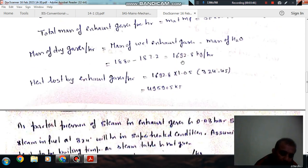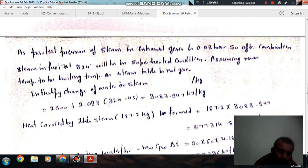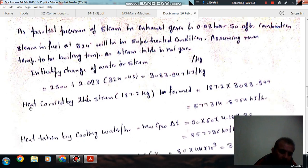Now we have mass of dry gases, so we can find out heat loss by the dry gases. Heat supplied by fuel equals 495905.2 kJ per hour. Now it is given that the partial pressure of the steam in the exhaust gas is 0.03 bar, steam temperature is 324 degrees Celsius, and room temperature is 45 degrees Celsius. Assuming room temperature to be boiling temperature, the saturation temperature corresponding to 0.03 bar is 24 degrees Celsius.